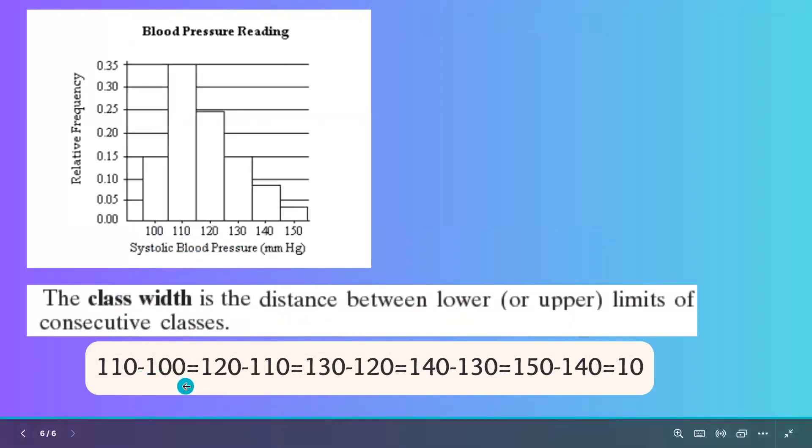110 minus 100 is the same as 120 minus 110, the difference between these two midpoints. 130 minus 120, 140 minus 130, 150 minus 140, all are equal to 10. So the class width is 10.